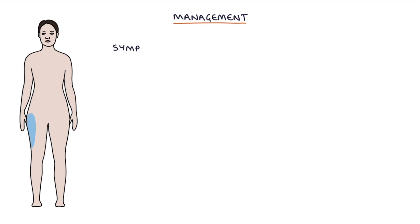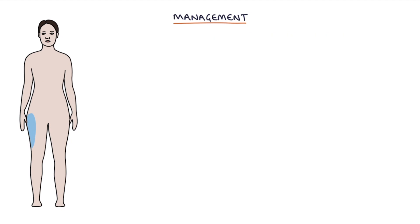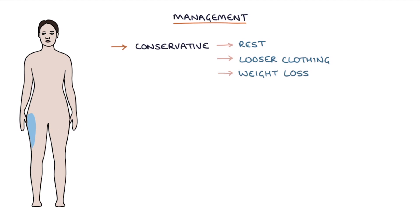Finally, let's move on to management. Symptoms vary from mild and self-limiting to severe and persistent, and management can be conservative, medical, or surgical. Conservative management involves rest, wearing looser clothing — as tight clothing such as belts may add pressure to the nerve — weight loss if appropriate, and physiotherapy.